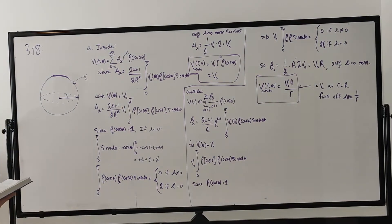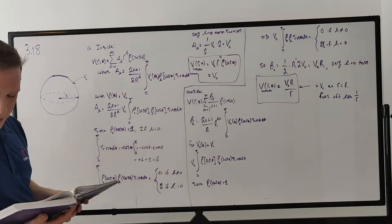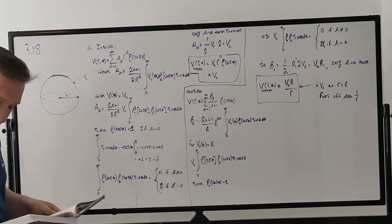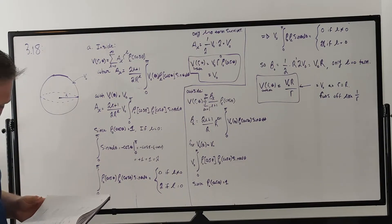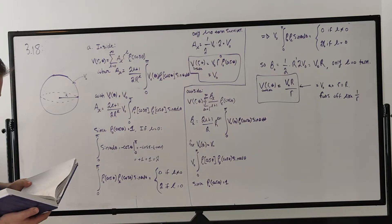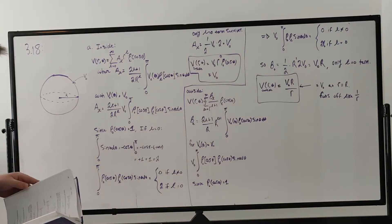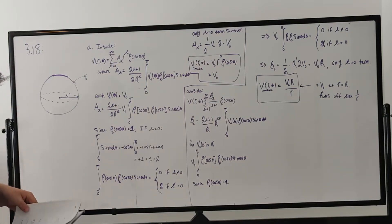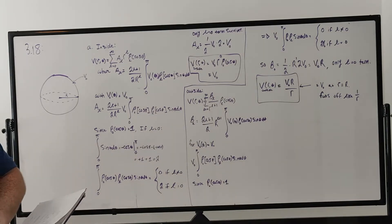Hello, everyone. Welcome to problem 3.18 of David Griffith's Electrodynamics. Jumping into the problem — Part A, it's two parts. Part A says: suppose the potential is constant V-naught over the surface of a sphere. Use the results of example 3.6 and example 3.7 to find the potential inside and outside the sphere.